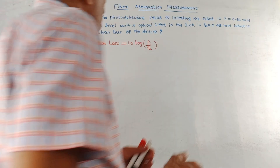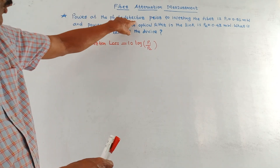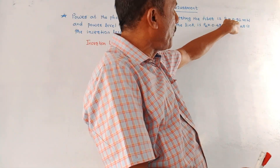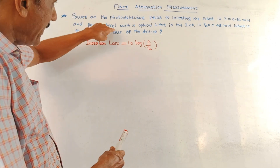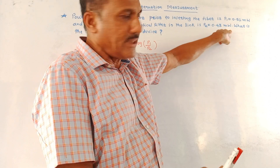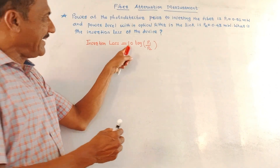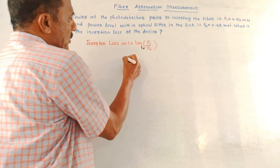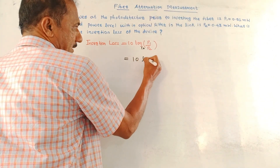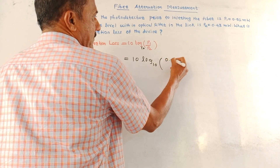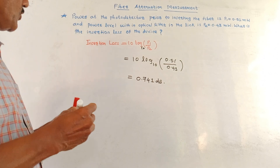Now let us discuss a numerical example on insertion loss measurement. Given: power at the photo detector prior to inserting the fiber is P1 = 0.51 mW, and the power level within the optical filter in the link is P2 = 0.43 mW. The insertion loss formula is: Insertion Loss = 10 × log₁₀(P1 / P2). Substituting the values: 10 × log₁₀(0.51 / 0.43) = 0.741 dB. So the insertion loss is 0.741 dB.